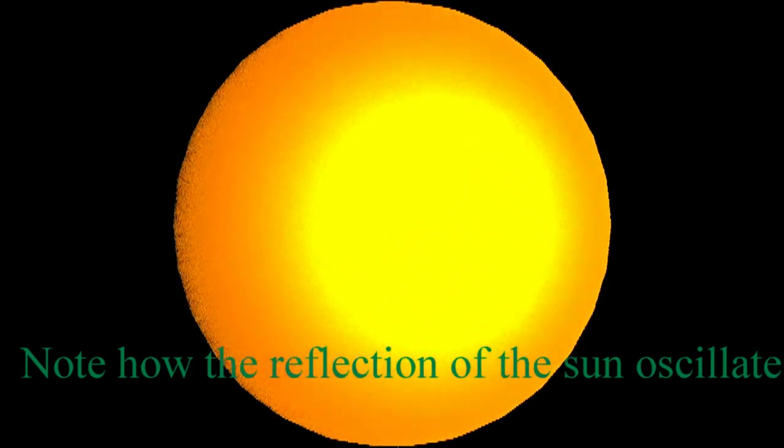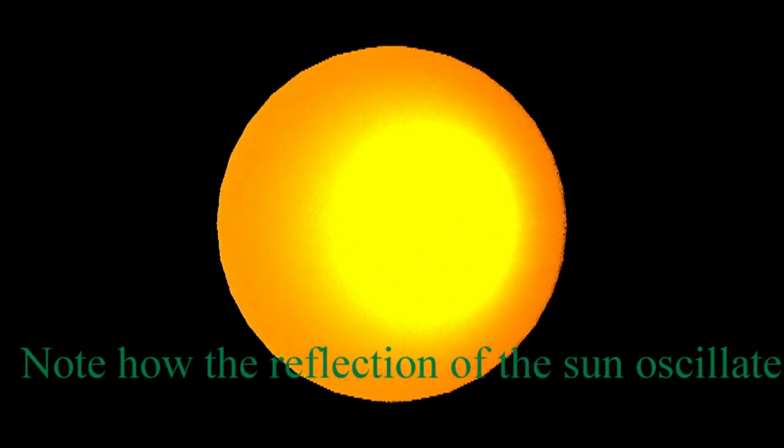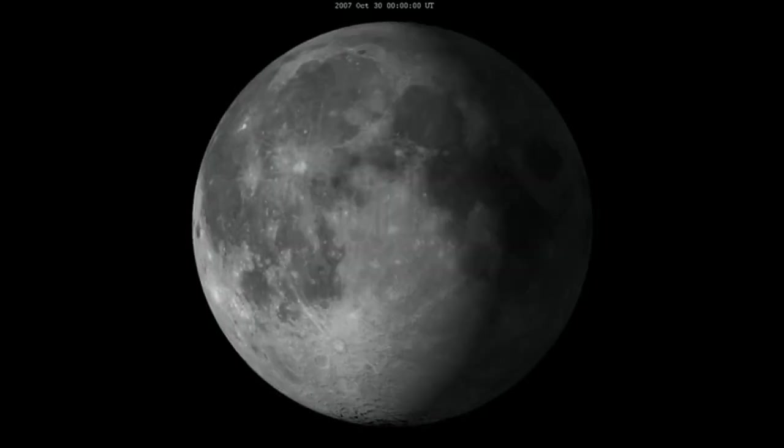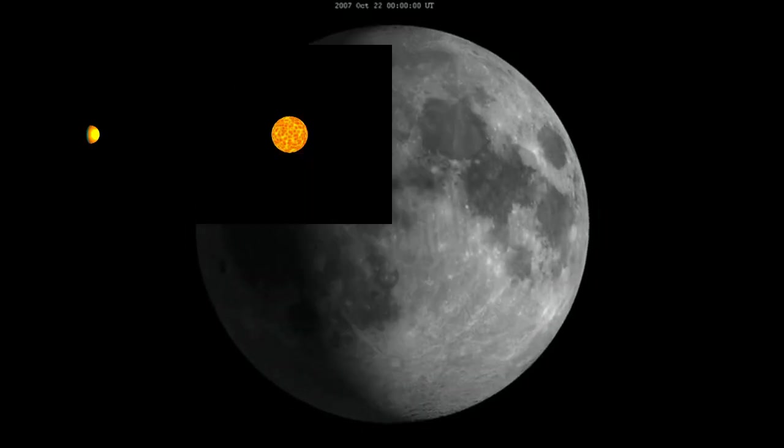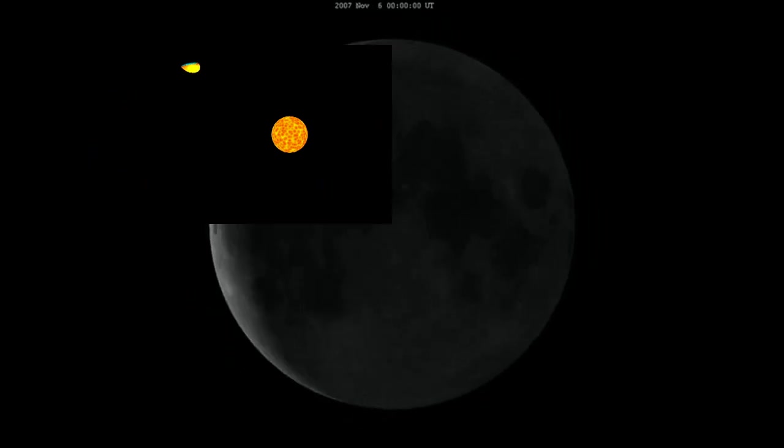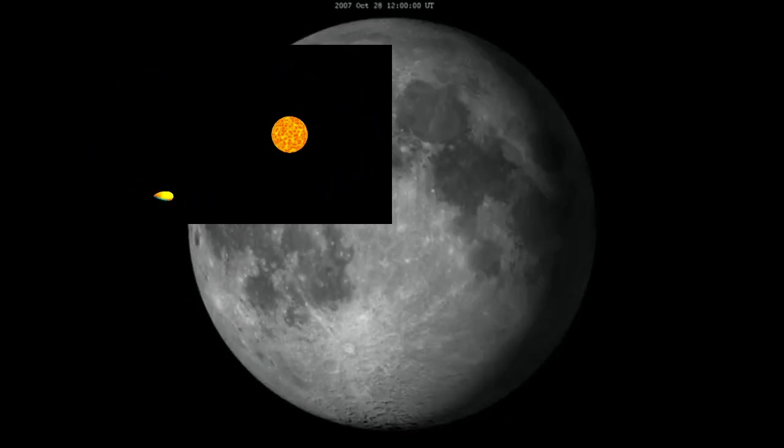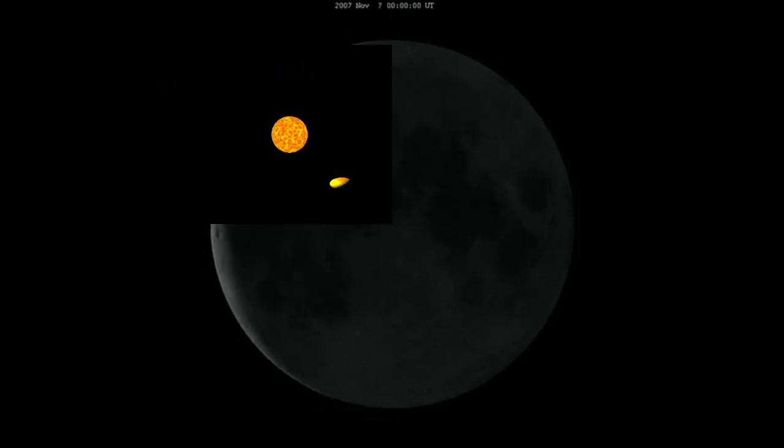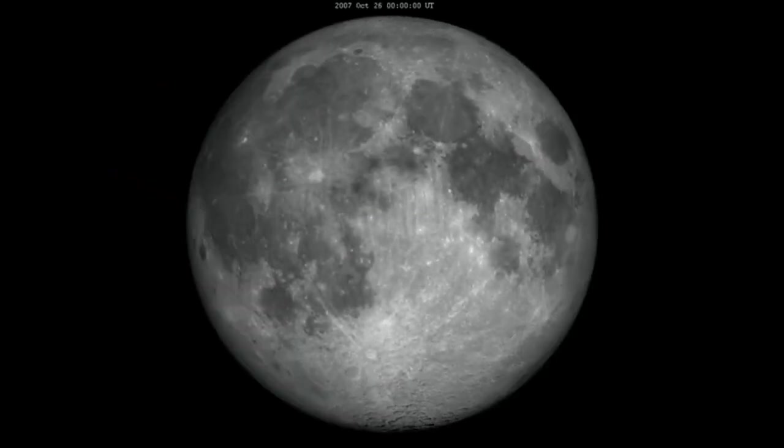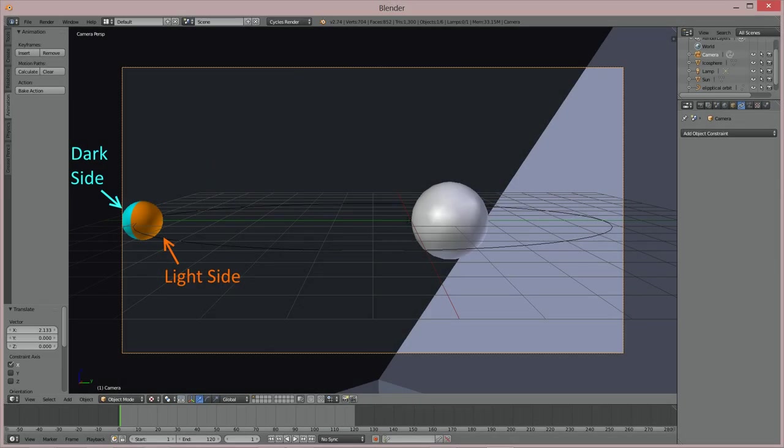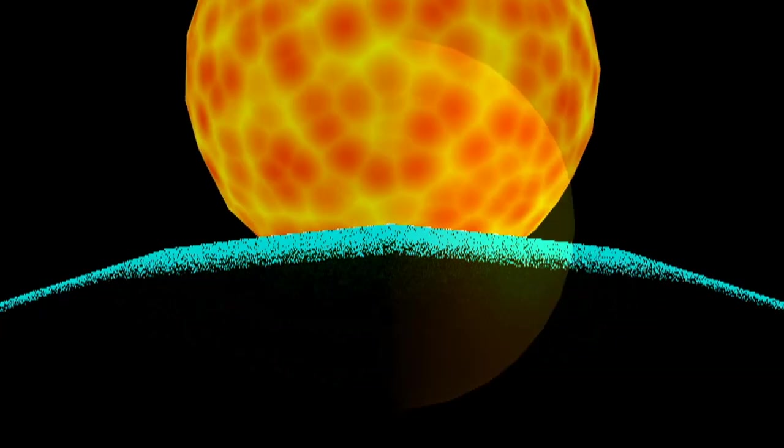However, tidally locked objects do sort of squirm around. We say our own moon only shows us one face all the time, so we see half of it, but that's not quite true. Libration, an effect of the eccentricity of orbits and of things not being point-like objects, makes slightly more than half of a tidally locked object visible to the object it's locked to. We can see about 59% of the moon's surface over the course of a month, not 50%. For a tidally locked planet with similar libration, this would mean the sun would actually dip over and under the horizon in some places the twilight band.